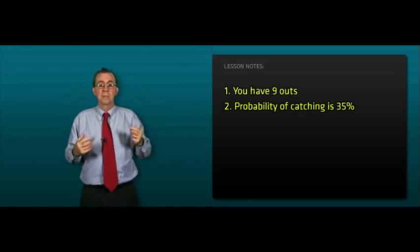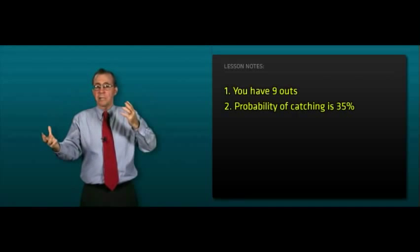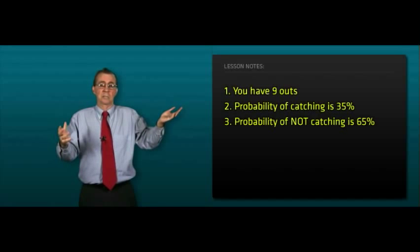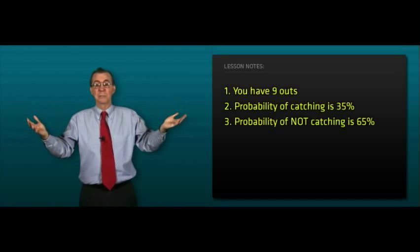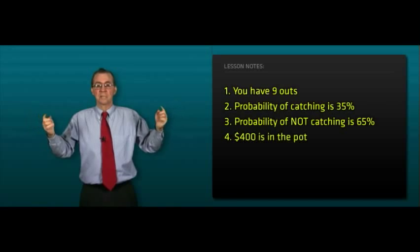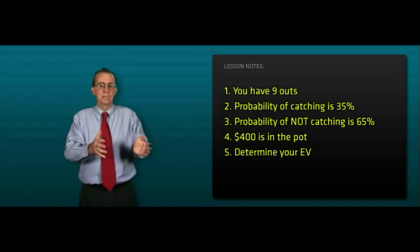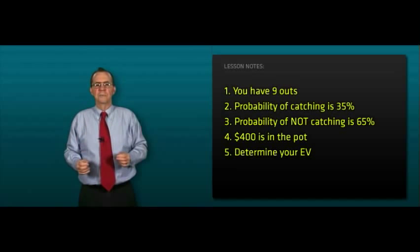Now we've got to do the mental math. We've got to calculate the probability of not catching. Well, if you've got a 35% chance of catching, you have a 65% of not catching. See how much is in the pot, and now we determine our expected value. If it's positive, we're going to stay in with a call or raise; if negative, fold.